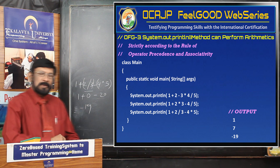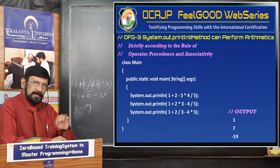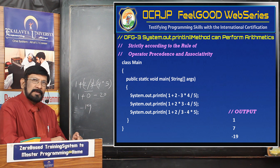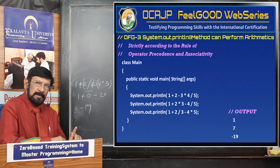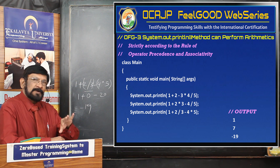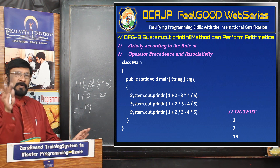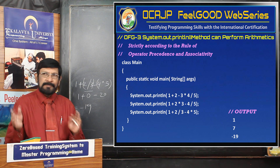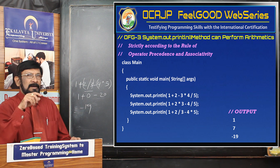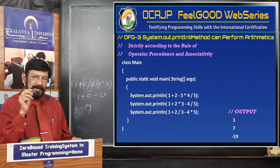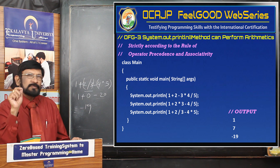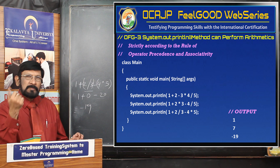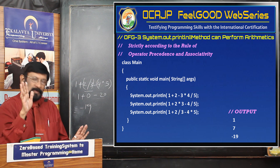One tip I give you: for this type of statement, before executing the program, manually calculate the result. Whatever test cases you are making, after executing don't just trust the computer — you may commit a mistake because you may not know a rule. Manually calculate first, then execute and verify with the result. If both don't match, you can understand which points you are missing. You may miss a point on integer division, for example. This is the right way of preparation.